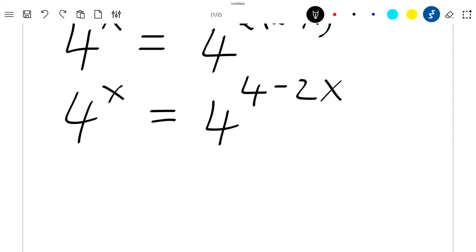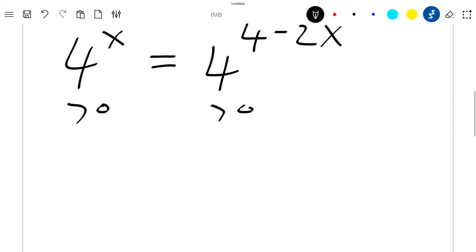Knowing that this is greater than zero and this is also greater than zero, if you apply the log function here, which I call ln, you'll just have ln of 4 to the power of x is equal to ln of 4 to the power of 4 minus 2x.